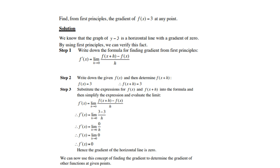Next example: find from first principles the gradient of f(x) = 3 at any point. We know that the graph y = 3 is a horizontal line with a gradient of 0, and by using first principles we can verify this. Step 1: write down the formula, then substitute x+h, which of course equals 3. So we get the limit as h→0 of (3 − 3) over h, which is the limit of 0 over h, which is the limit of 0. The limit of a constant is the constant, so the gradient of the horizontal line is 0.